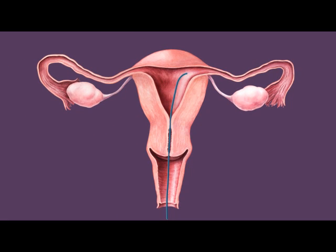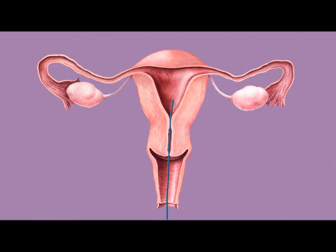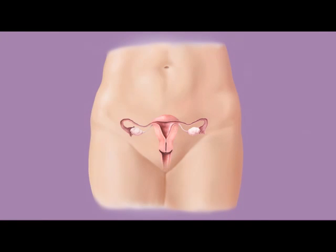Finally, dye is again injected into the endometrial cavity to check that both fallopian tubes are now completely open. The patient can return home the day of the procedure and can go back to a normal routine within 24 hours. Little to no pain should be felt post-procedure. Now that the tube is opened, the egg can pass from the ovary to the endometrial cavity, and successful conception should now be a greater possibility.